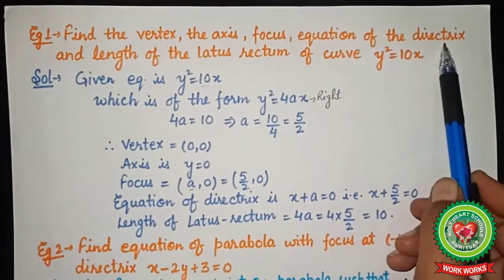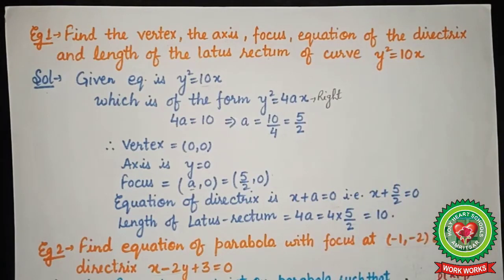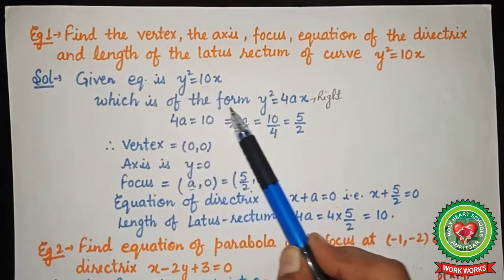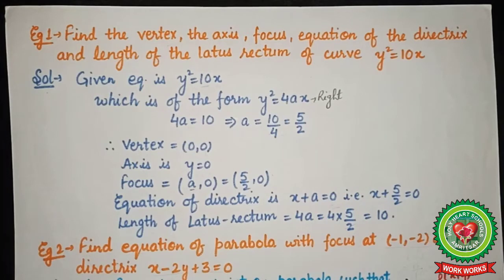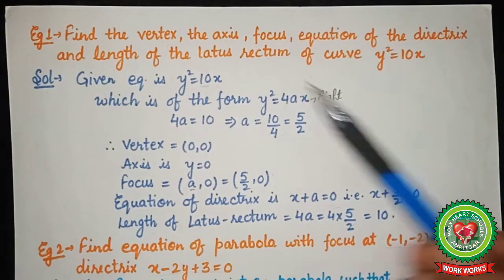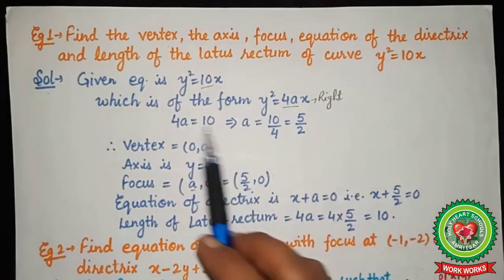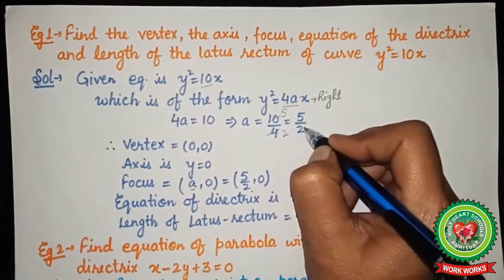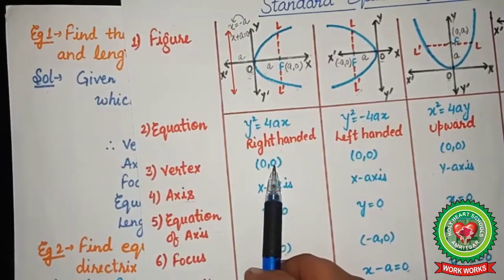Now some examples based on these properties. The first example: find the vertex, axis, focus, equation of the directrix, and length of the latus rectum of the curve y² = 10x. First we identify which parabola is given. The equation y² = 10x is of the form y² = 4ax, so it is a right-handed parabola. Comparing the two equations, 4a = 10, so a = 10/4 = 5/2.